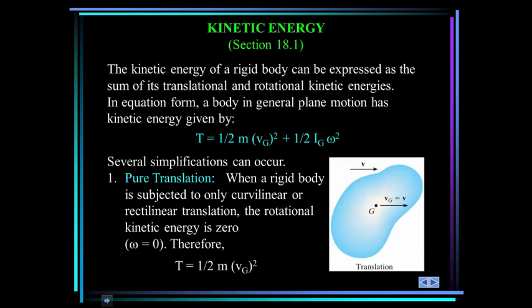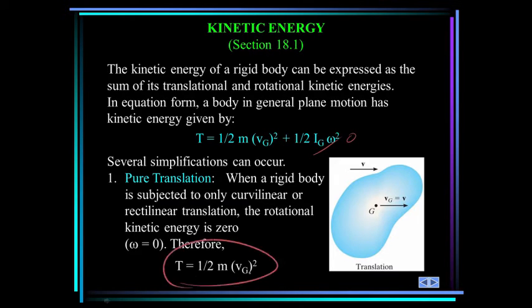Some simplifications can occur if the body is undergoing pure translation — that means it is not rotating. The omega term goes to zero, and the kinetic energy of that body is one-half the mass times the velocity of the mass center squared. Remember, that's for pure translation, no rotation.